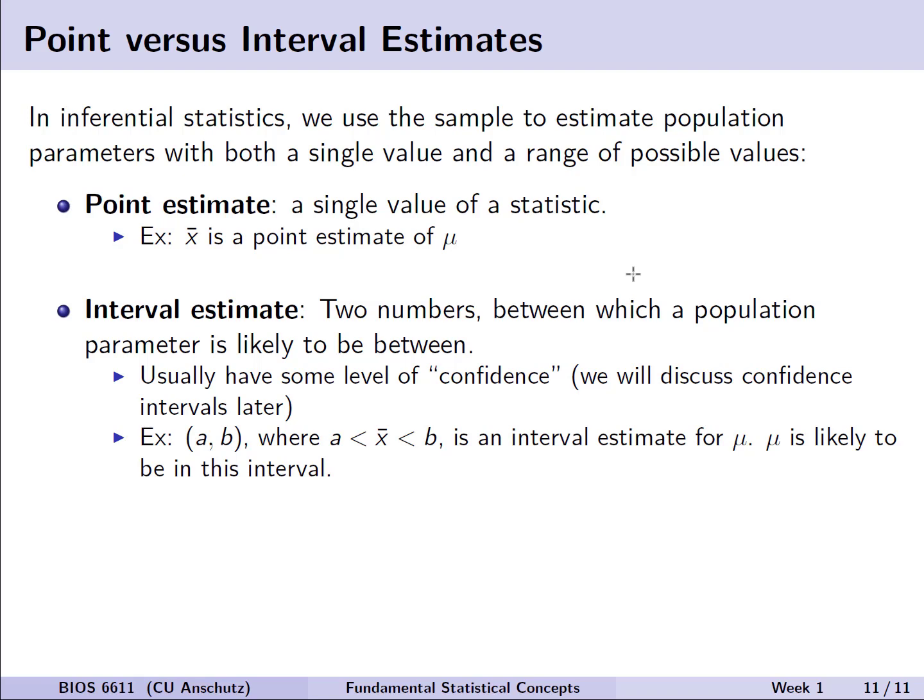And a final thing to note that will come up throughout the semester is point versus interval estimates. So when we are doing the inferential statistics, which will be the primary focus of this course, we'll use that sample to estimate our population parameters both with a single point estimate but also that interval or range of possible values for that range of uncertainty. So the point estimate again could be something like, if we're interested in the population parameter of the mean μ, we might have x-bar, that sample mean from the previous slide, being our point estimate.